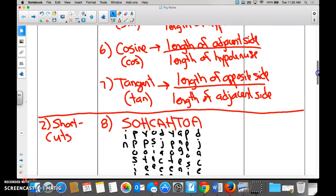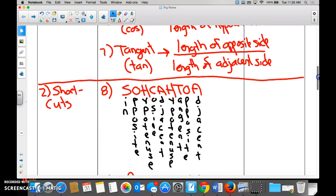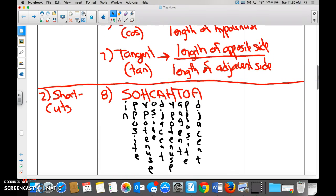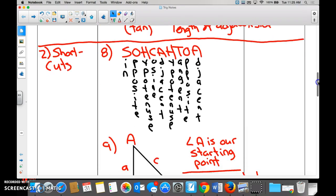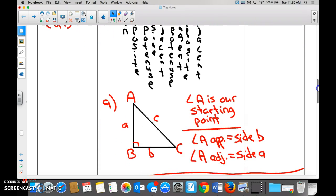And what is the key to remembering that? Or what is the acronym to remember which is which? Everybody? SOH CAH TOA. Sine opposite hypotenuse. Cosine adjacent hypotenuse. Tangent opposite adjacent.